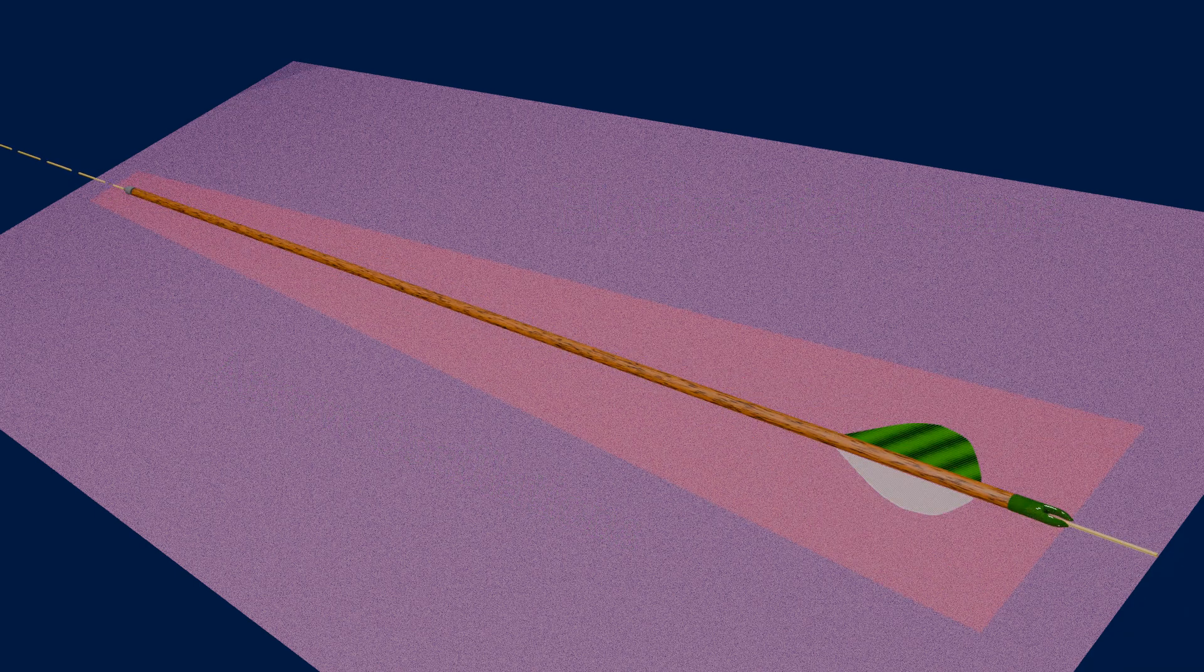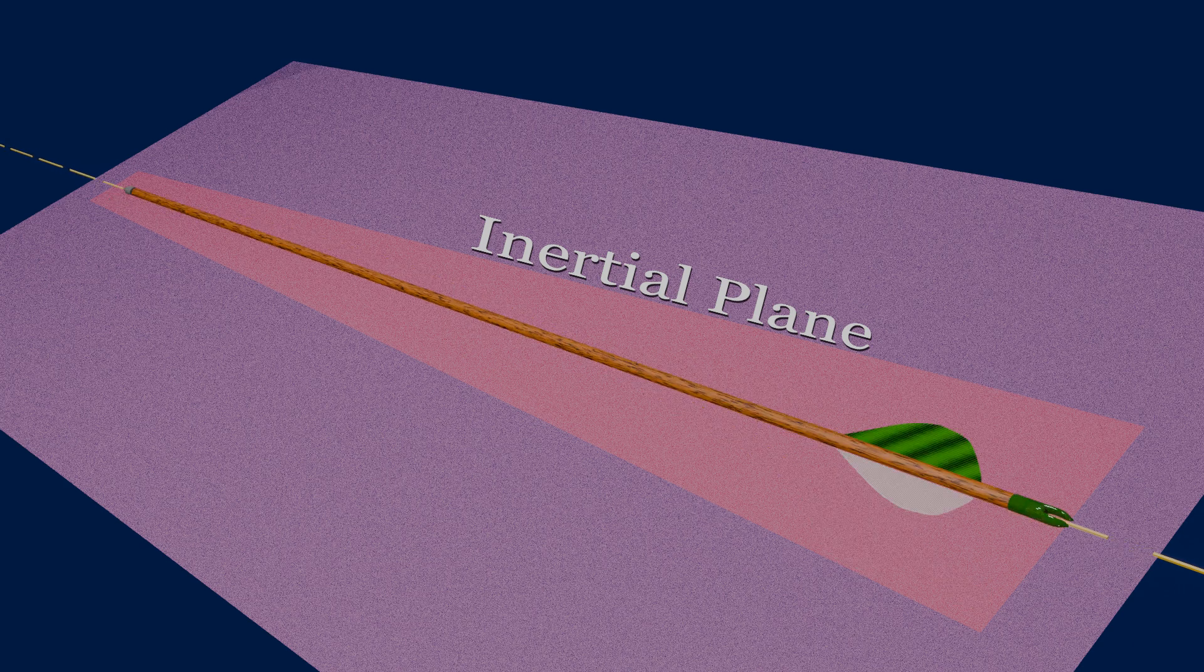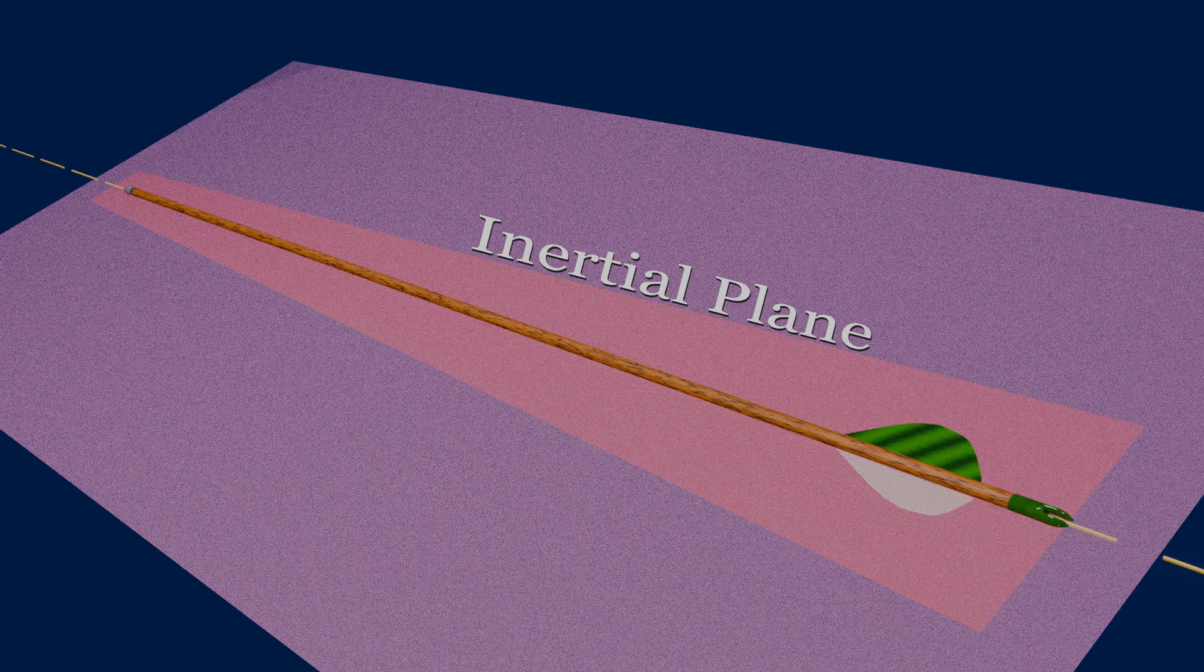The vibrations produce an inertia, a resistance to change in position, that aligns with the plane of vibration. This is somewhat similar to the angular momentum of a gyroscope. Indeed, the gyroscopic sensors in your phone use an oscillator.